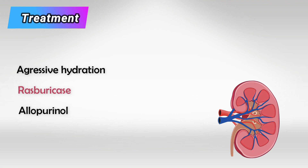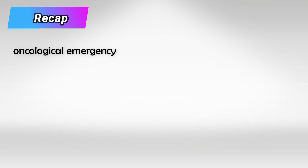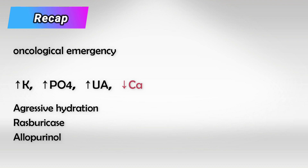If you want to protect the patient before starting chemo, you can give them allopurinol, which prevents the formation of uric acid. To recap: tumor lysis syndrome is an oncological emergency caused by a large lysis of tumor cells, usually with the first dose of chemo. The patient will have high potassium, high phosphate, high uric acid, and low calcium. We treat with rasburicase and hydration, and we can prevent it with allopurinol.